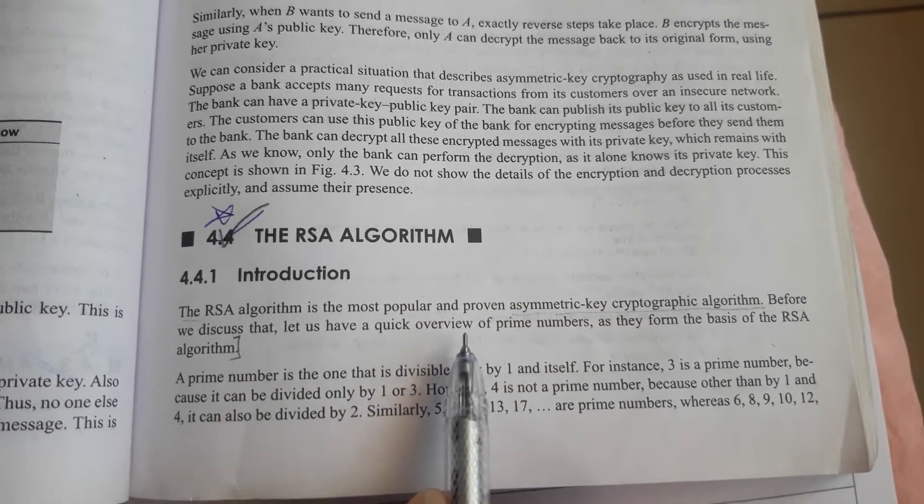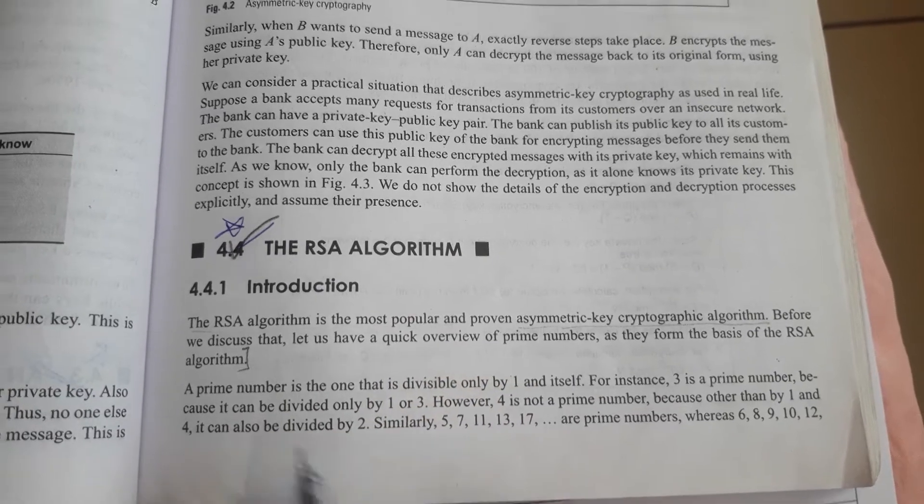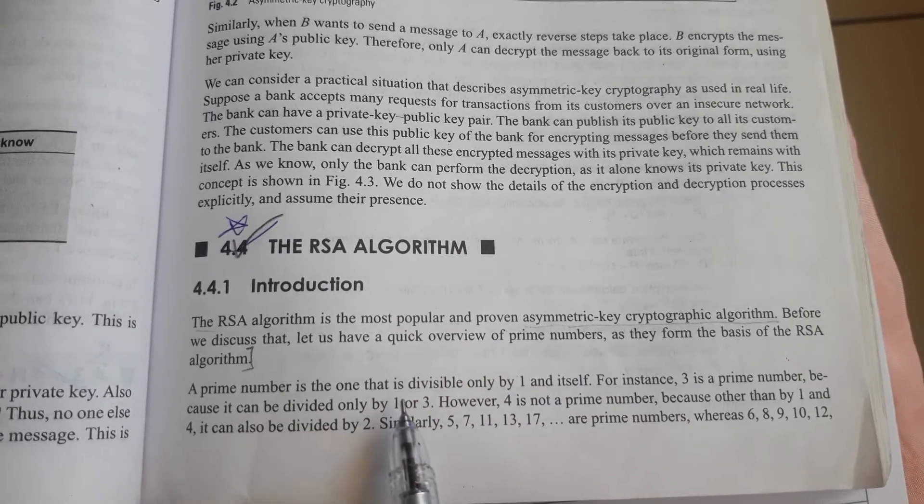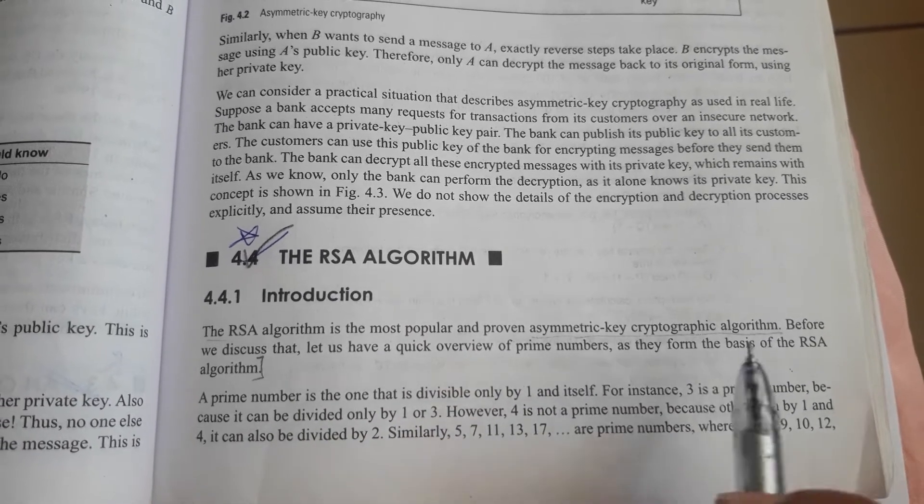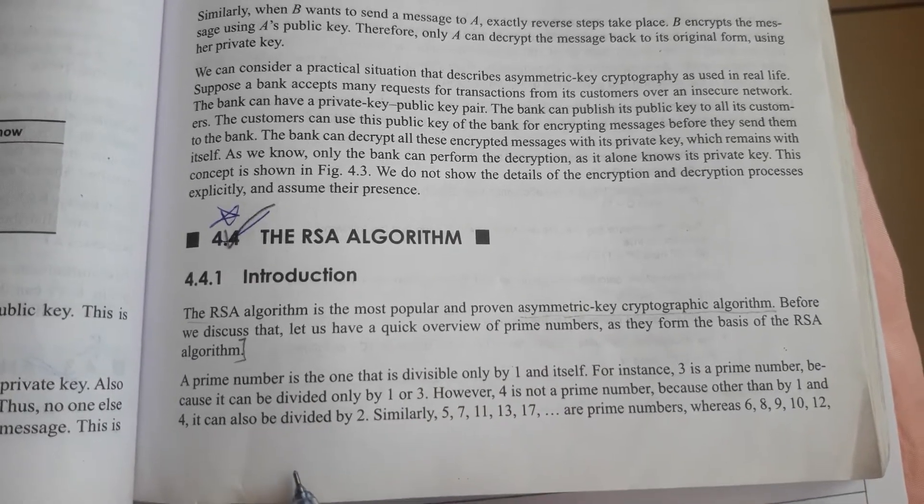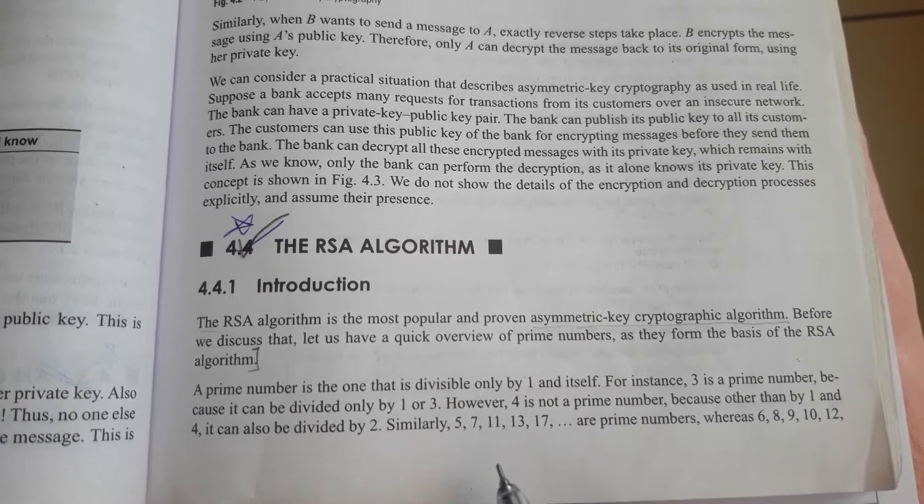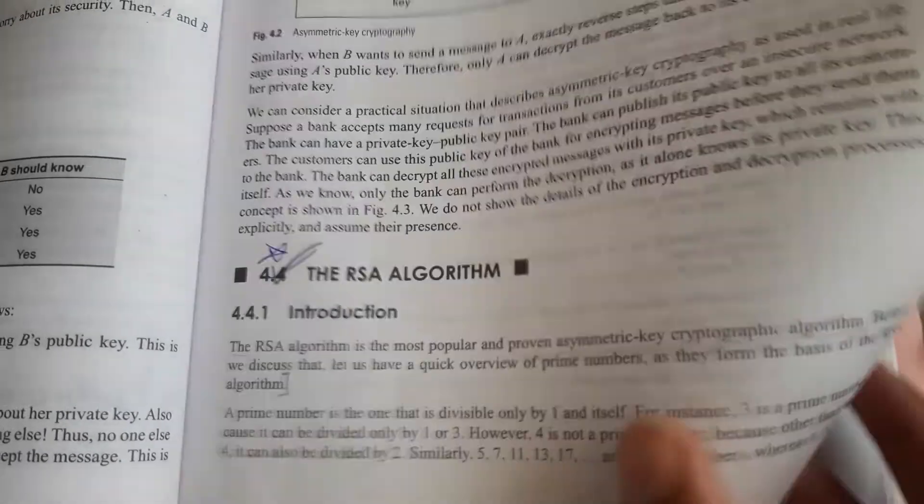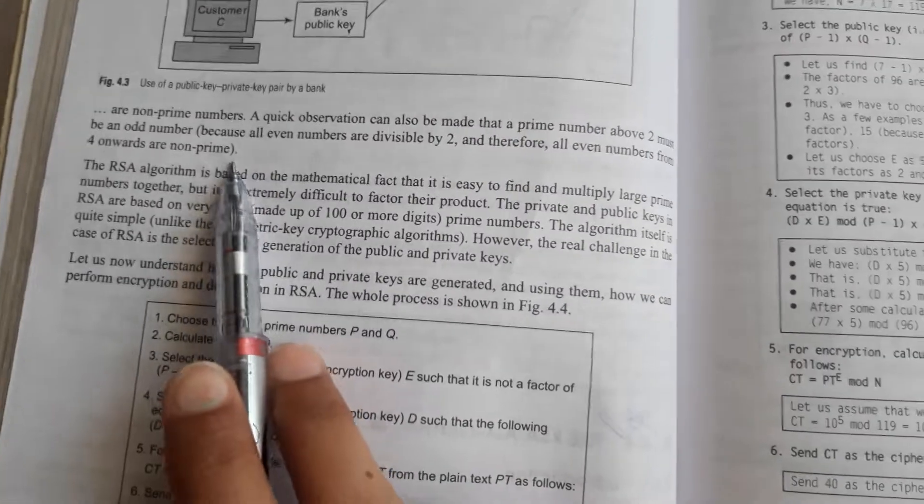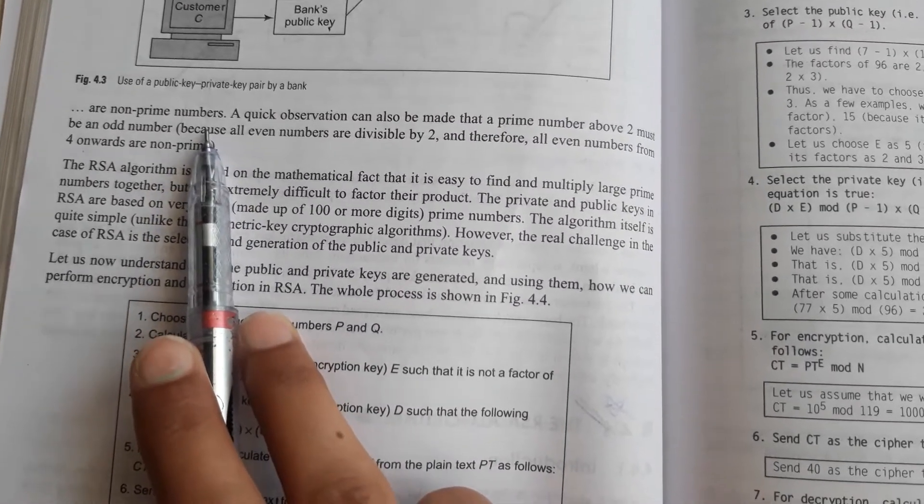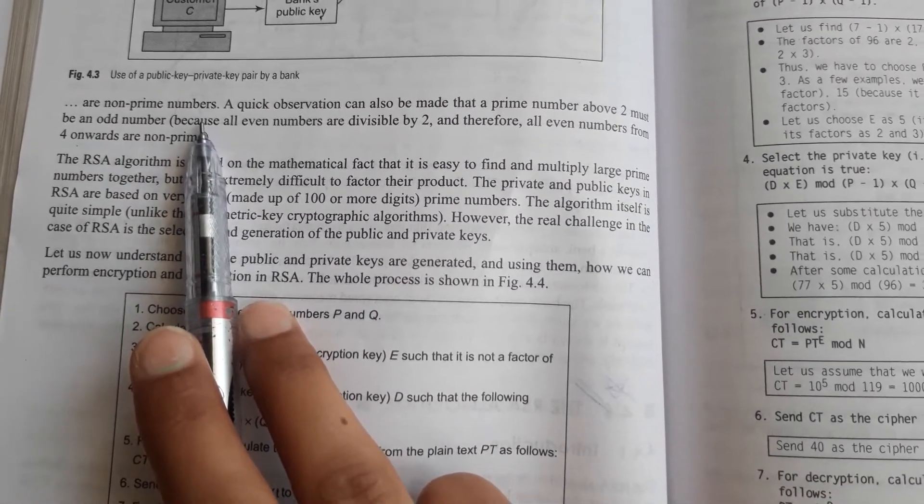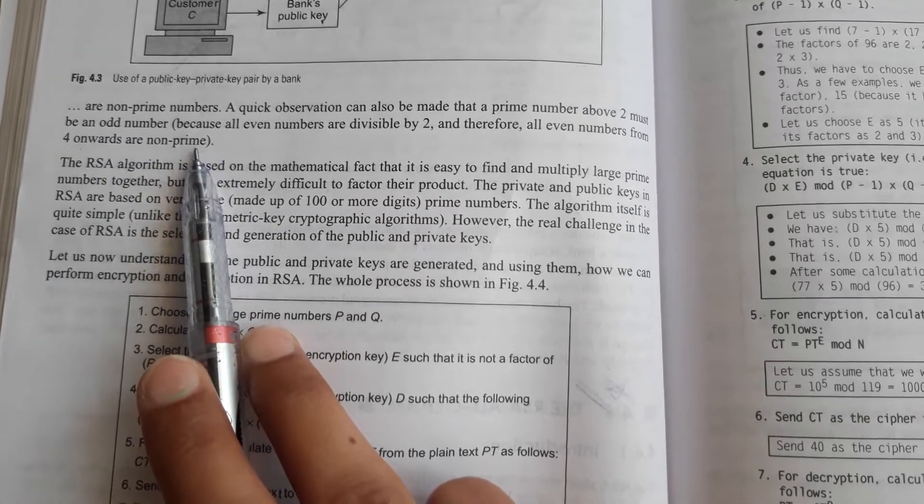all we have to know what is a prime number. A prime number is basically those numbers that are divisible only by one and itself. So 3 is a prime number, 5, 7, 11, 13 all are prime numbers, whereas 6, 8, 12 are not prime numbers because they are even numbers and divisible by 2.